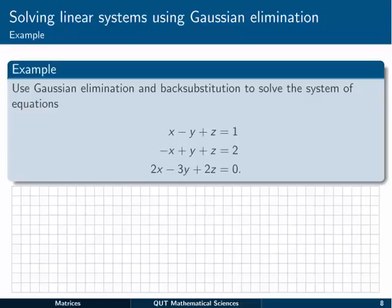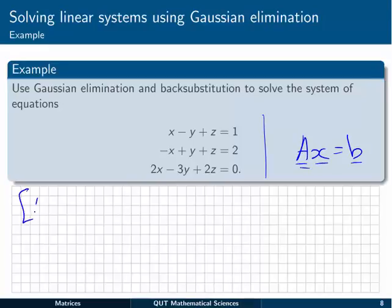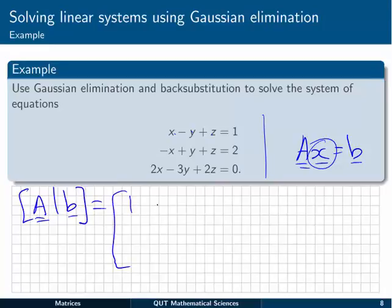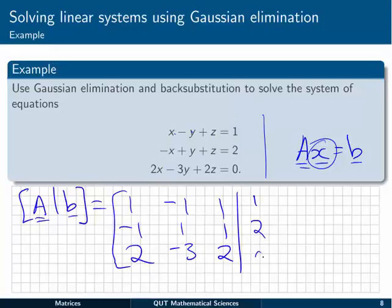Let's work through a full example using Gaussian elimination and back substitution to solve a system of three equations in three unknowns. Going straight to the augmented matrix form, A augmented with B gives us the coefficients: 1, minus 1, 1; minus 1, 1, 1; 2, minus 3, 2. Then on the right-hand side, the values 1, 2, and 0.